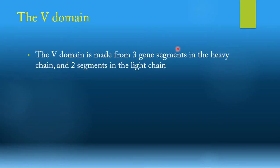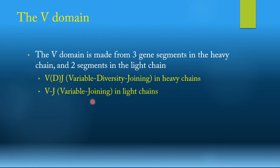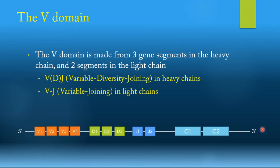The V domain is different in the heavy chains and in the light chains. In the heavy chains, there are three gene segments that make this domain: the variable V, the diversity D, and the joining J. So V, D, J are present in the heavy chains, while the light chain only has two segments — the variable and the joining. So the heavy chains have V, D, J, and the light chains have V and J.